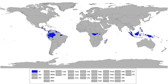A tropical rainforest climate, also known as an equatorial climate, is a tropical climate usually, but not always, found along the equator. Regions with this climate typically feature tropical rainforests, and it is designated AF by the Köppen climate classification.